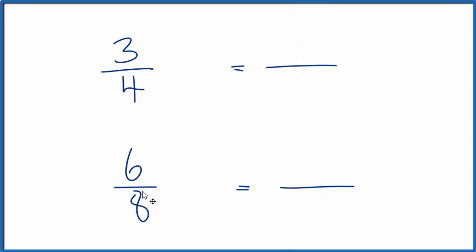So four goes into eight two times, so I'm just going to multiply this by two. Four times two gives me eight, and over here we already have eight, six over eight. But we can't just multiply this by two.